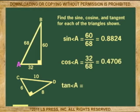Next, for the tangent of angle A, we select the opposite over the adjacent. So 60 over 32 will give you the tangent, which is 1.8750.